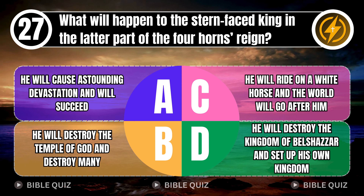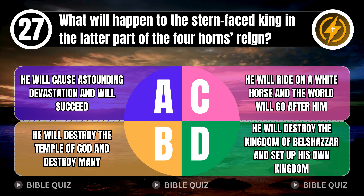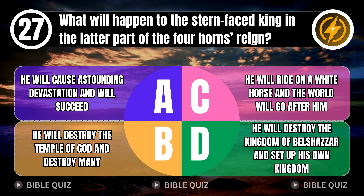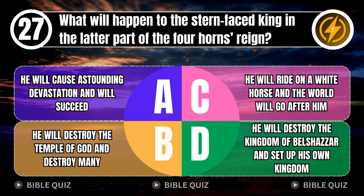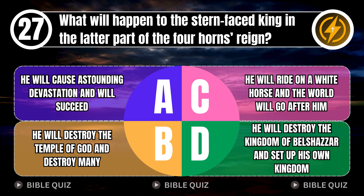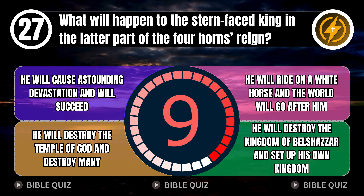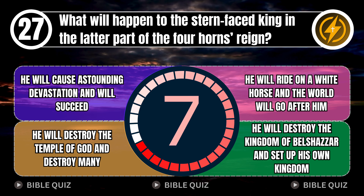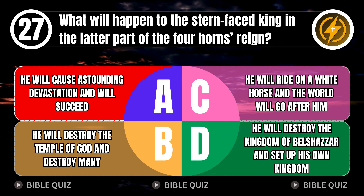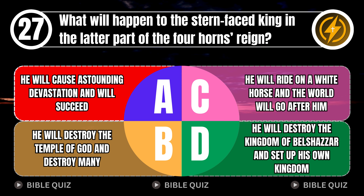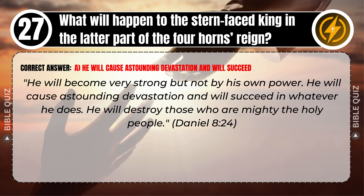Question 27: What will happen to the stern-faced king in the latter part of the Four Horns' reign? A. He will cause astounding devastation and will succeed. B. He will destroy the temple of God and destroy many. C. He will ride on a white horse and the world will go after him. D. He will destroy the kingdom of Belshazzar and set up his own kingdom. Correct answer: A. He will cause astounding devastation and will succeed. He will become very strong, but not by his own power. He will cause astounding devastation and will succeed in whatever he does. He will destroy those who are mighty, the holy people. Daniel 8 verse 24.